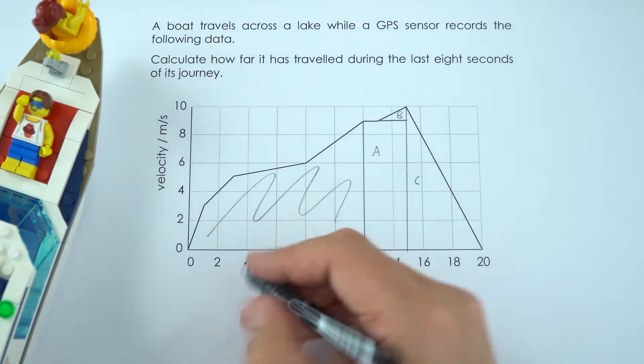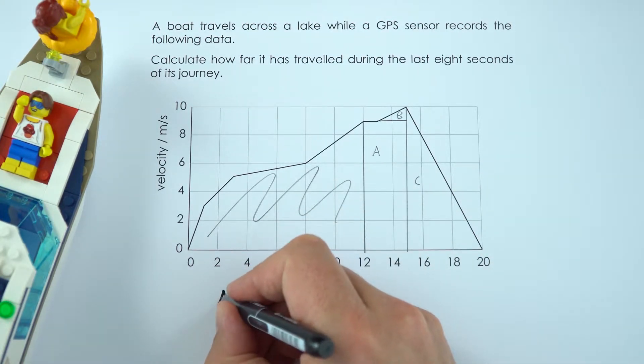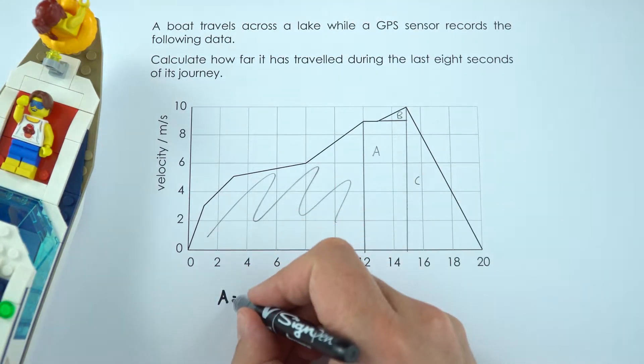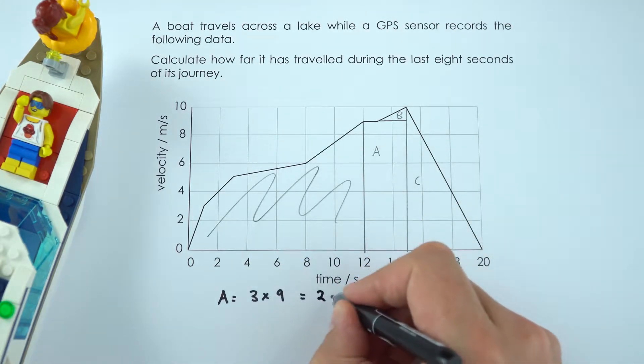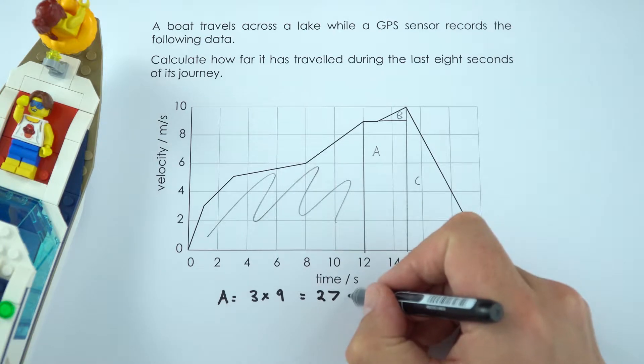So to calculate the area of area A, well because it's a rectangle it's going to be equal to the base times the height is equal to 27. I'm just going to put down meters as well to remind me that this is a distance I'm calculating.